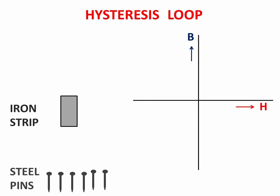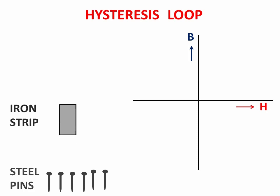Now let us see what is the hysteresis loop. This animation will help to understand the experimental part along with the graph. Here you can see some steel pins and an iron strip. On the right-hand side, a BH curve is drawn taking H along the x-axis and B along the y-axis. H is the external magnetic field (bar magnet's field), and capital B is the magnetic field generated by the iron strip.